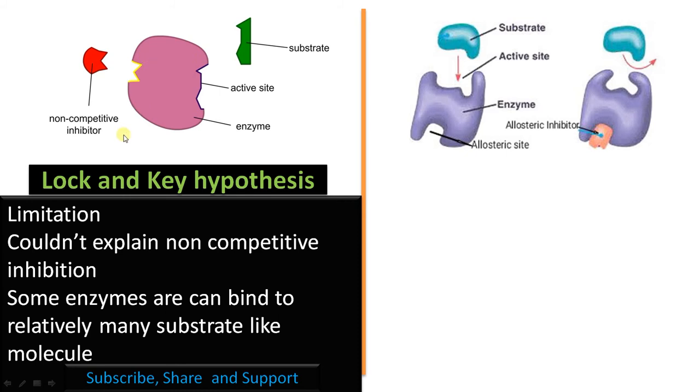Now we know that a non-competitive inhibitor can bind to an allosteric site that causes conformational change in the active site. According to Lock and Key hypothesis, the active site is rigid so it won't change. Therefore this type of regulation cannot be explained by Lock and Key hypothesis.